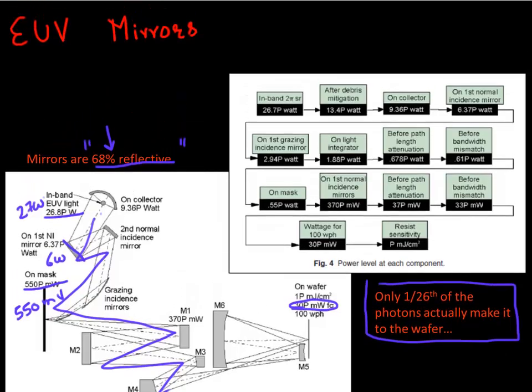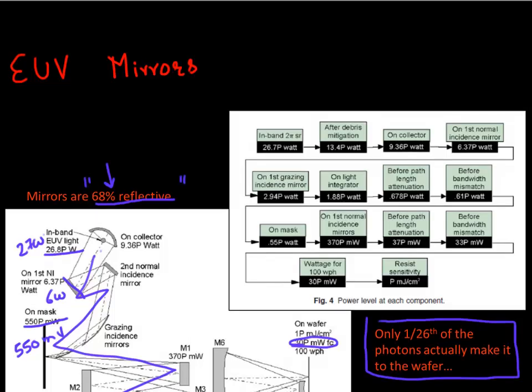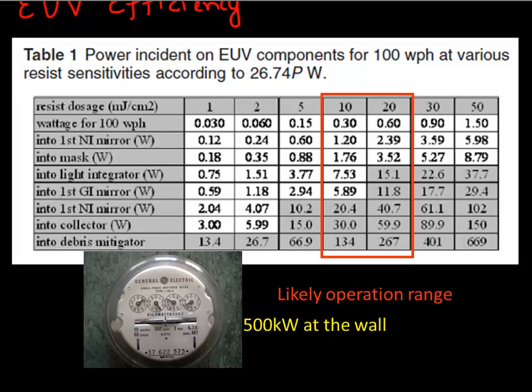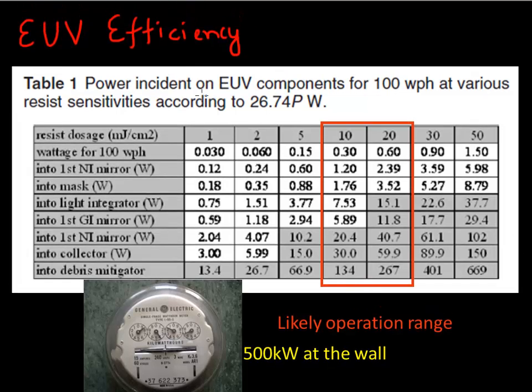So this points to how inefficient your whole EUV business is. This table again highlights the efficiency or the lack of efficiency in EUV.